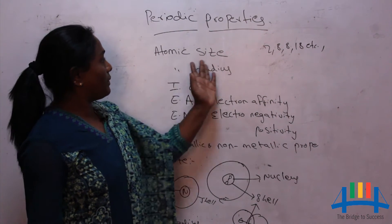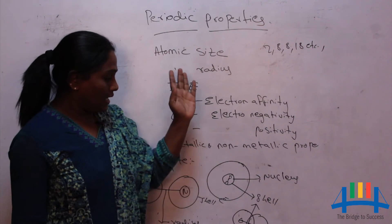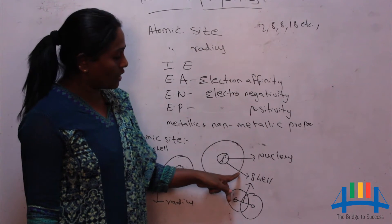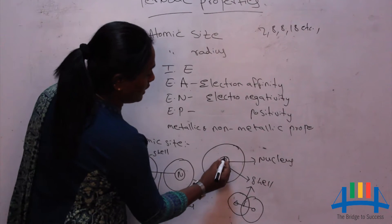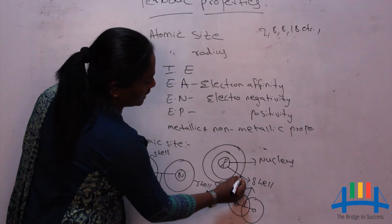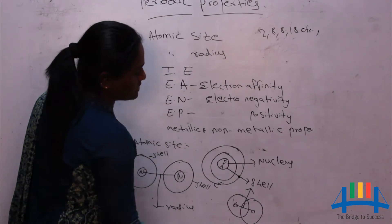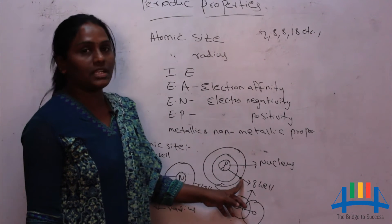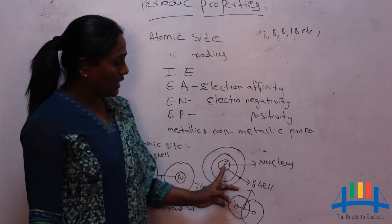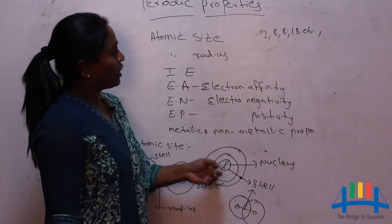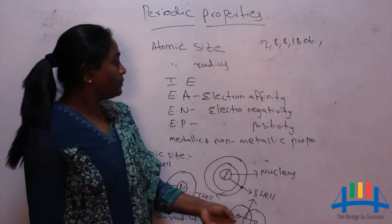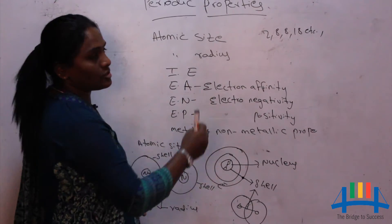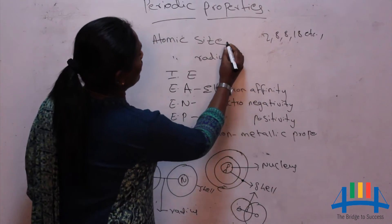In this today we will learn about atomic size. Atomic size means it is the distance between the nucleus and the outermost shell — we have to consider the outermost shell, not an inner shell. The shell which is present at last is considered the outermost shell. The distance between the nucleus and this outermost shell is called atomic radius. If atomic radius is more, the size is more; if radius is less, the size is also less. That we can call atomic size.